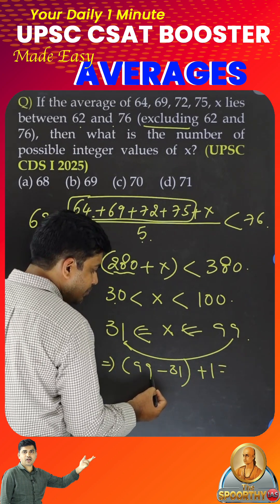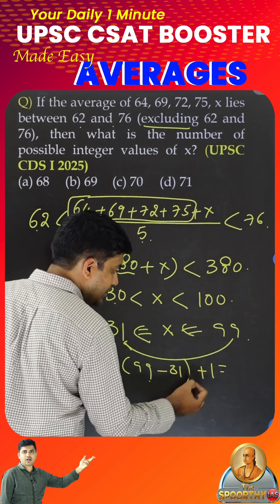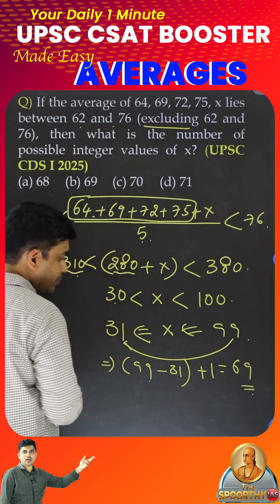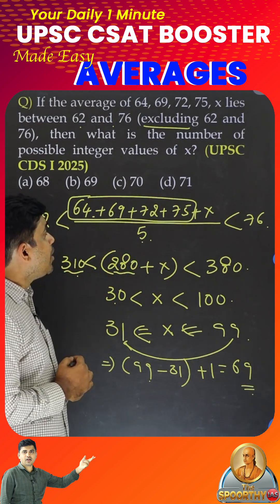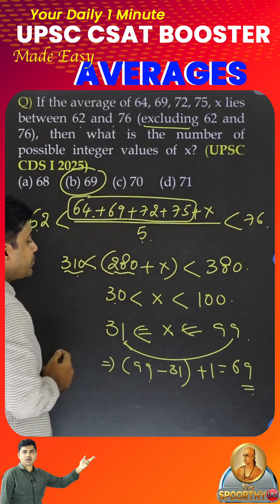Largest number minus smaller number plus 1. 99 minus 31 is 68. 68 plus 1 is 69 total. So, option B is the right answer.